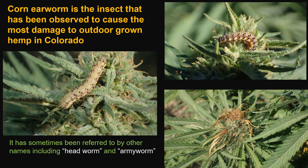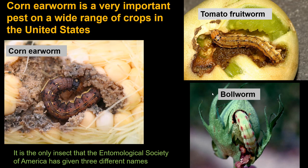The corn earworm has been the species that has caused the most damage. It has been spotty, but it has caused extensive damage in some areas of the state. This is also an insect that can be found essentially across the United States. It is a highly dispersive insect that feeds on a wide range of crops. Historically, growers may refer to this as a head worm or an army worm, but the name best associated with it would be the corn earworm.